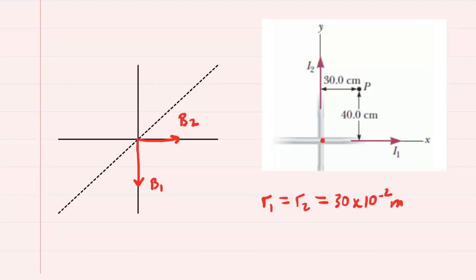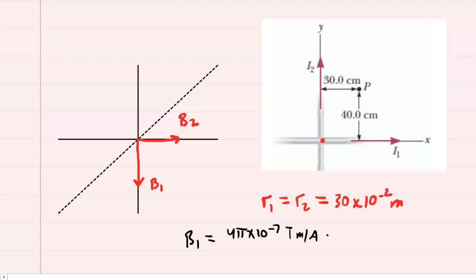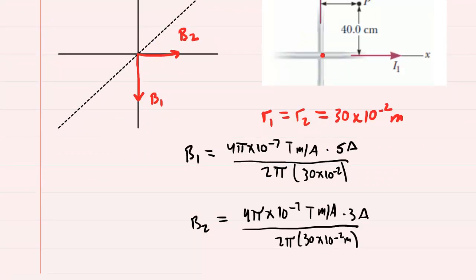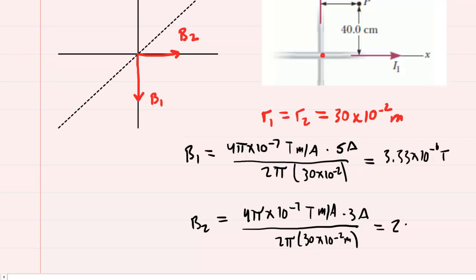Using the equation to calculate the magnitudes: B1 is the constant multiplied by the current in wire number 1, which was 5 amps, divided by 2π times the distance of 30 times 10 to the minus 2. We set up B2 similarly and compute them. B1 is 3.33 times 10 to the minus 6 tesla, and B2 is 2 times 10 to the minus 6 tesla.